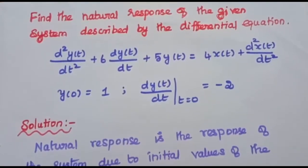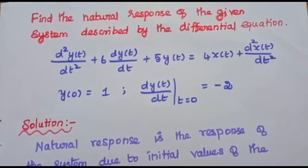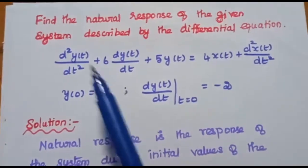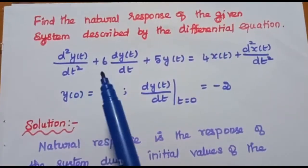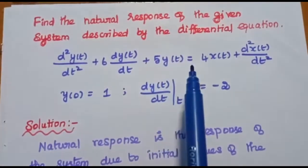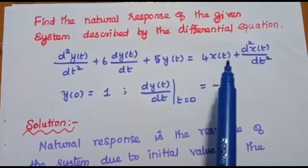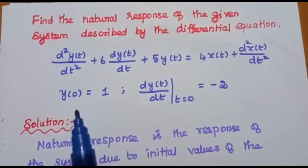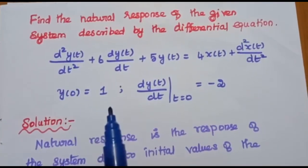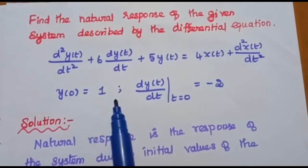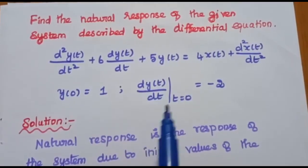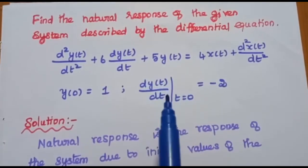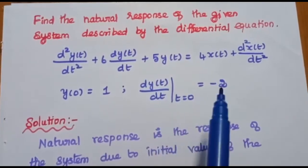The first problem is to find the natural response of the given system described by the differential equation: d squared y of t by dt squared plus 6 dy of t by dt plus 5 y of t is equal to 4x of t plus d squared x of t by dt squared. The initial conditions of the output signal are given as y of 0 is equal to 1, and dy of 0 by dt is equal to minus 2.